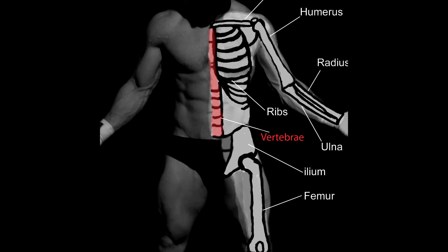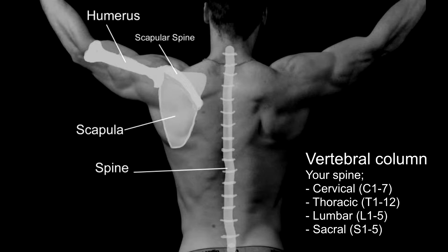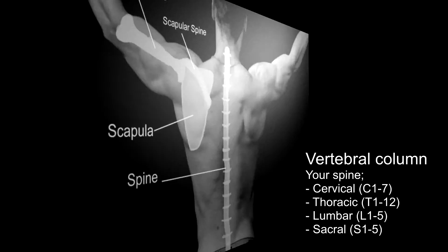Let's take a look at your vertebrae and your vertebral column. Your vertebral column consists of 24 articulating vertebrae and 9 other ones that are fused to the coccyx and the sacrum. Aside from providing you with structural support, it also houses and protects your spinal cord, which gives your brain the ability to communicate with the rest of your body. Your spine is divided up into four different sections: the cervical, thoracic, lumbar, and sacral regions.